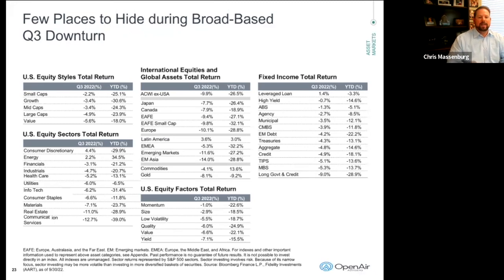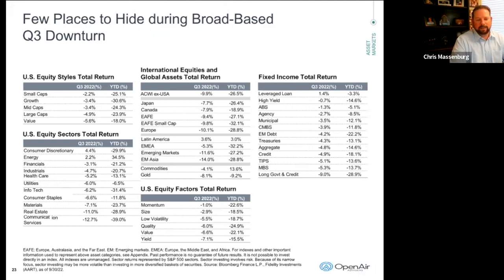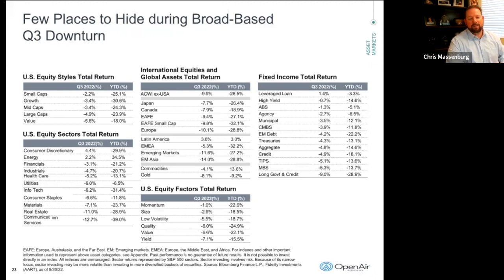Looking at the U.S. equity sector total returns: consumer discretionary is down almost 30%; energy is the one bright spot, up 34.5%. Most of us understand why — we've been to the gas pump and saw prices peak in the summer, though they've started to subside a little. They're still over $3 a gallon in most places. Financials down 21%, industrials, healthcare, utilities all down, with communication services being down almost 39%.